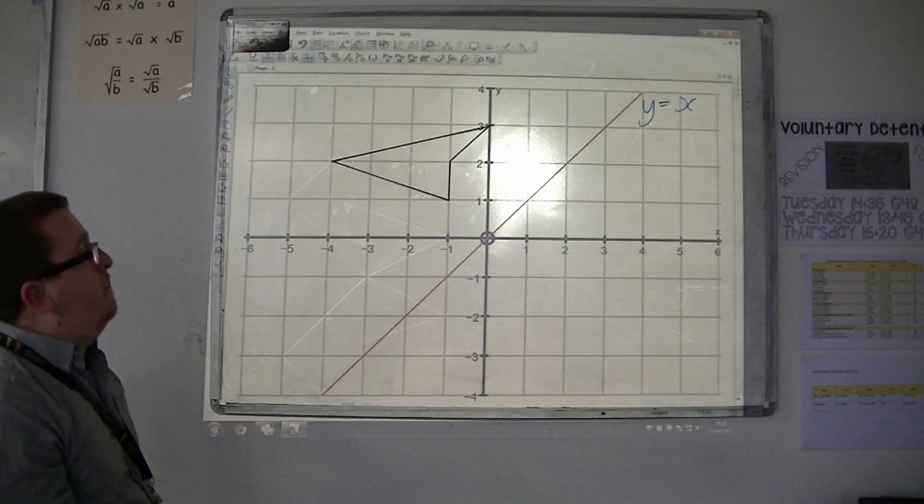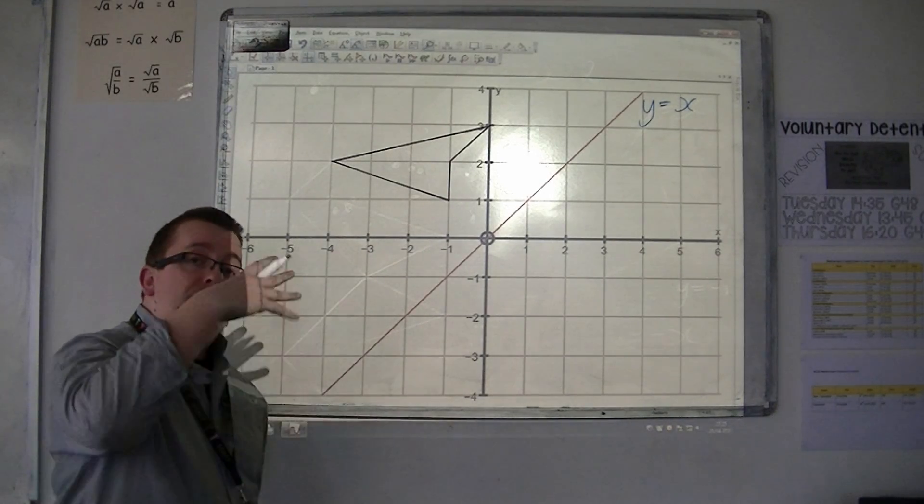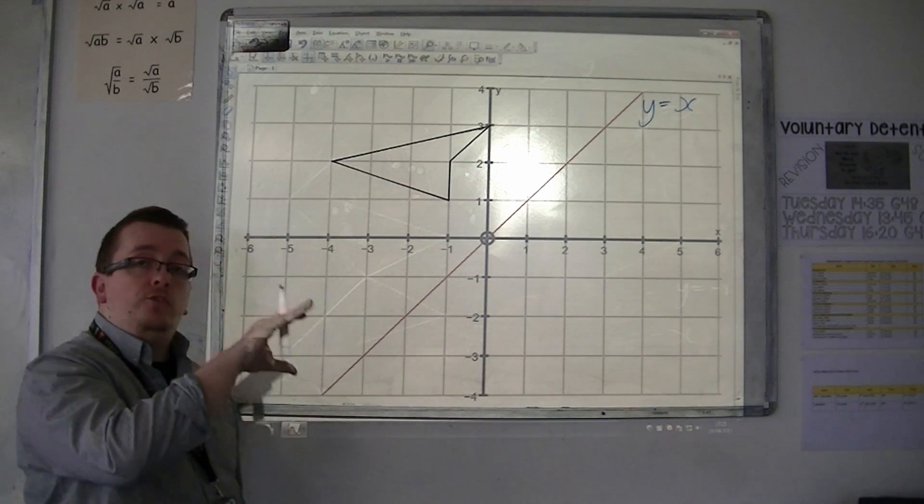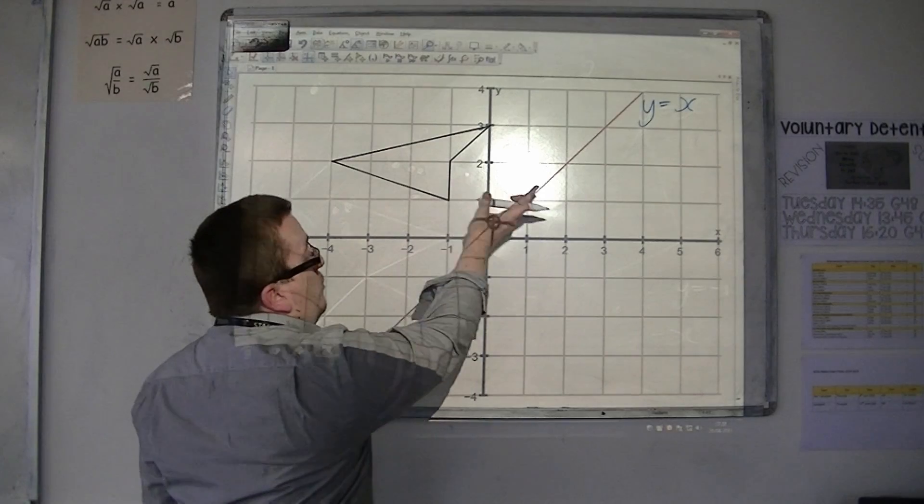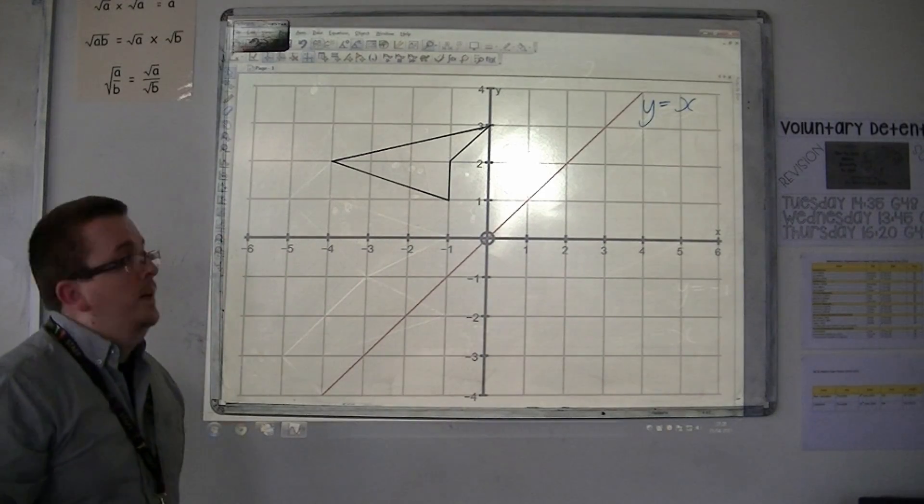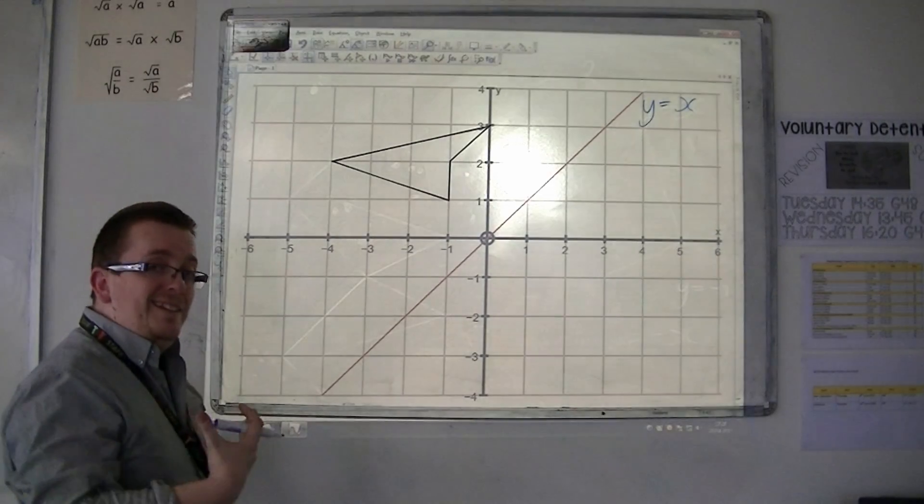Well, it works in much the same way as it has done before. We take each of the corners of the shape, we find how far each of those points are away from the mirror line, and then carry on through by the same amount. So the only difference here is that this time we are working diagonally.